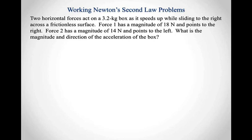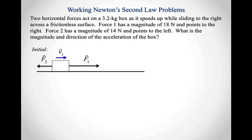Let's look at a couple of examples. For starters, let's say I've got two horizontal forces acting on a 3.2-kilogram box as it speeds up while sliding to the right across a frictionless surface. Force 1 has a magnitude of 18 newtons pointing to the right. Force 2 has a magnitude of 14 newtons pointing to the left. What's the magnitude and direction of the acceleration of the box? I'm going to start by drawing two pictures — one for the initial state, with my box sliding to the right and the two forces acting on it.